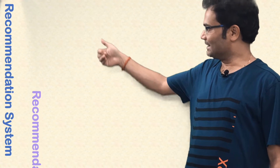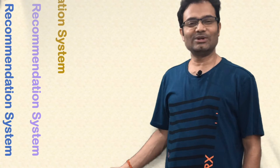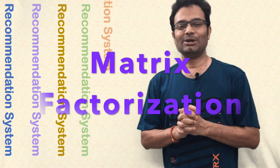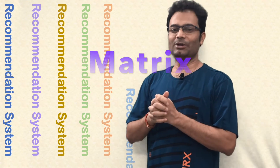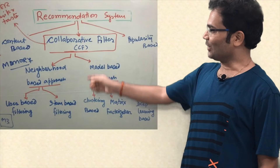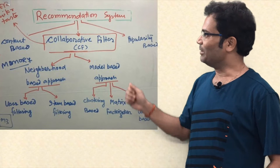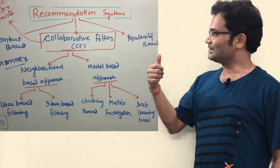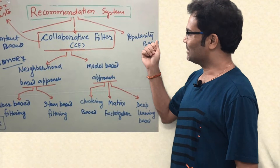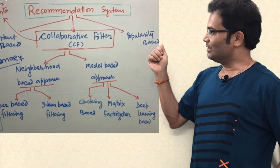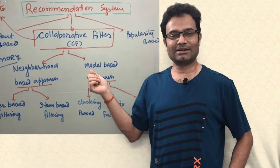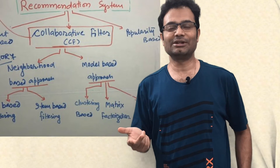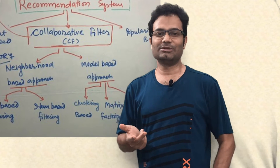Today's topic is recommendation systems and we are going to discuss the matrix factorization algorithm. In my previous video, we already discussed different kinds of algorithms for recommendation systems. We discussed content-based recommendation systems, probability-based systems, and also collaborative filtering — including item-based and user-based collaborative filtering approaches.